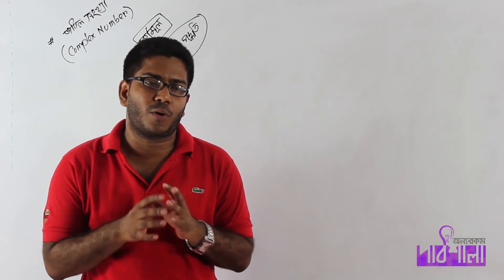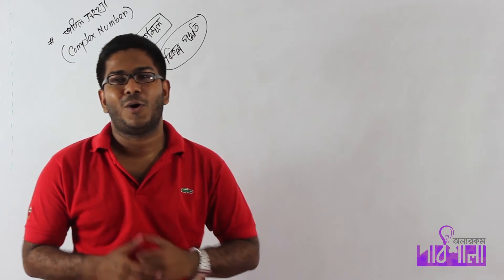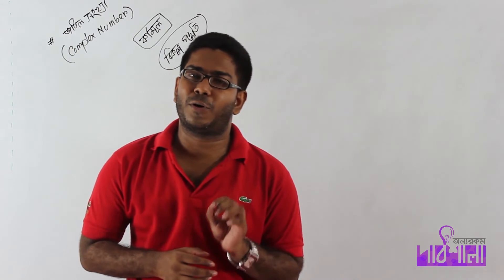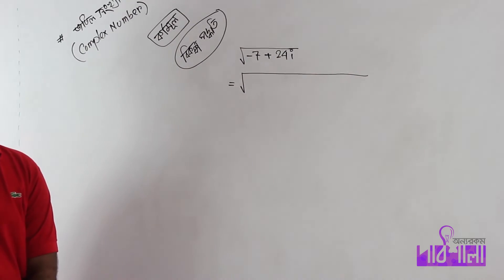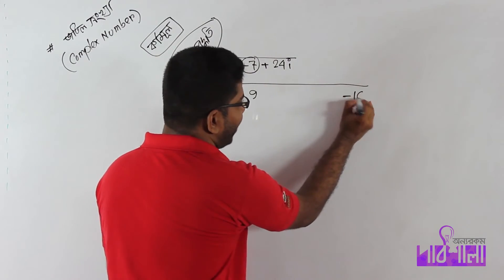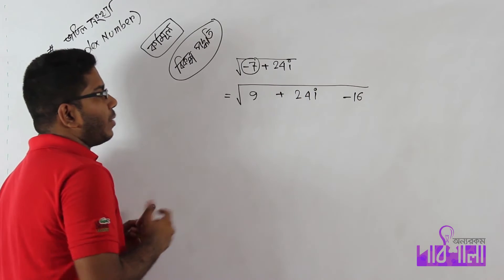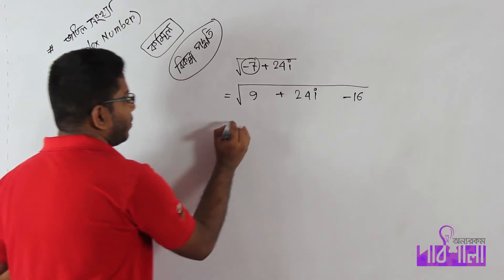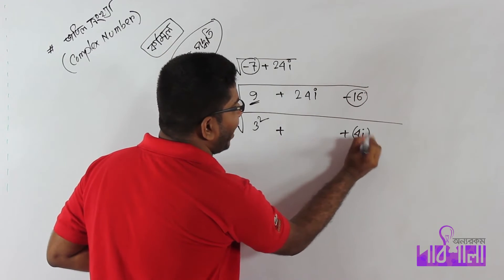I suggest that the first process is to follow the problem. If you do this process, you will learn it. Here we will try a second process, called 9-16. How do you write the square root using this approach?